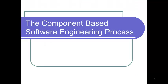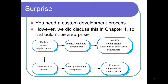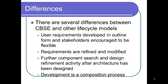The component-based software engineering process requires a custom development process. You outline system requirements, identify candidate components, modify requirements based on available components, create an architectural design, identify candidate components that fit that design, and compose the components to create the system. Key differences from other lifecycle models: user requirements are developed in outline form, stakeholders must be flexible, requirements need to be refined according to what components can deliver, and development is more of a composition process.